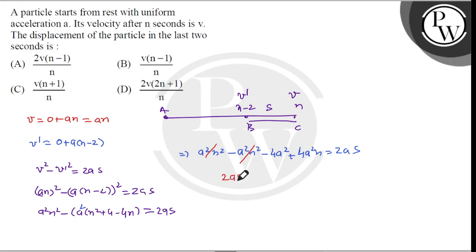So 2 a s is equal to 4 a square n minus 4 a square. This is equal to 2 a n minus 2 a, which equals 2 a times n minus 1.